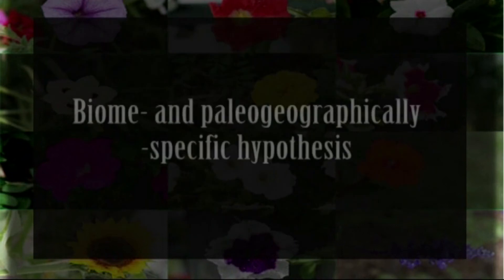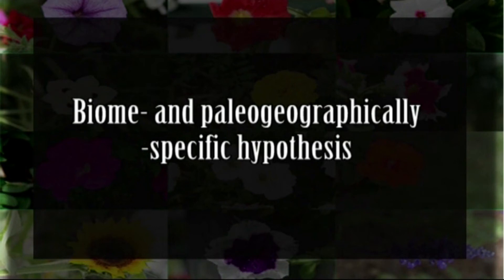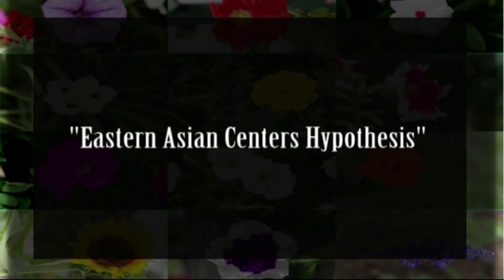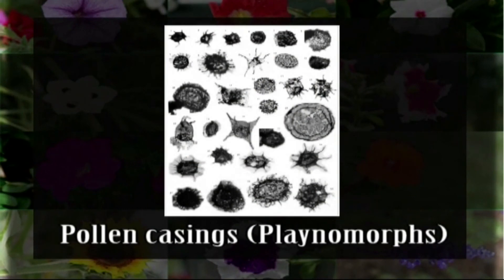Another hypothesis is the Biome and Paleogeographically Specific Hypothesis. Both upland and coastal hypotheses were proposed to explain topographical centers of origin and radiation of the first flowering plants. According to Stebbins, alpine biomes of northern latitudes might have been a center of early radiation of the angiosperms. A similar idea, the Eastern Asian Center Hypothesis, was put forth by Sun et al. in 2001. Based on the recovery and study of fossil pollen casings recovered from deep-sea drill holes, it was suggested in 2004 that early flowering plants might have evolved in a boreal cradle.